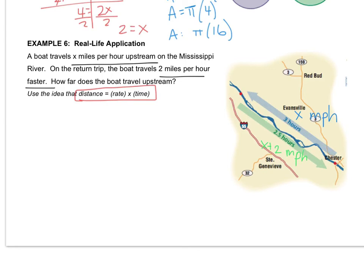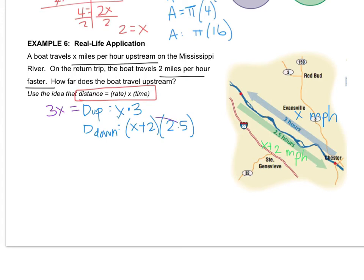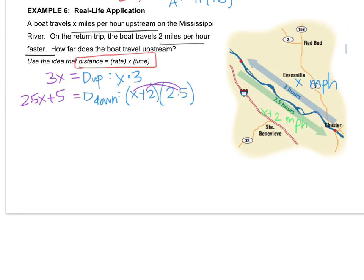So the distance going up is the rate x times 3 hours. The distance going down is x plus 2 times 2.5. Let's simplify: the upstream distance is 3x, and distributing the downstream gives 2.5x plus 5. The last thing to realize is that the distance from Chester to the dot is the same as the dot back to Chester — the distances are equal. So I can write the equation 3x equals 2.5x plus 5.